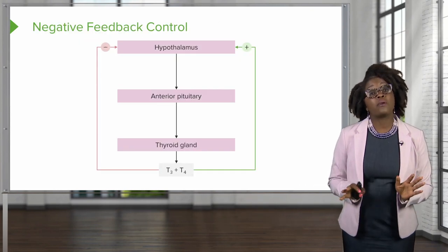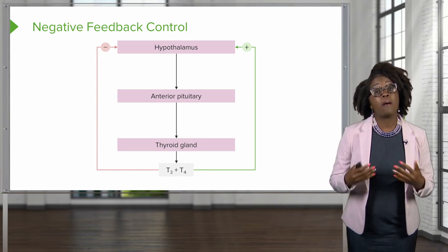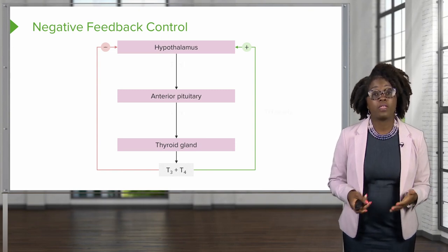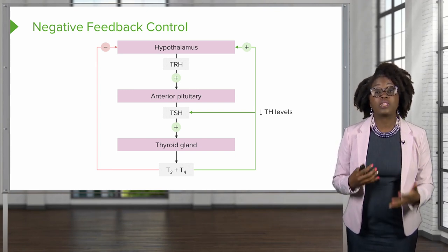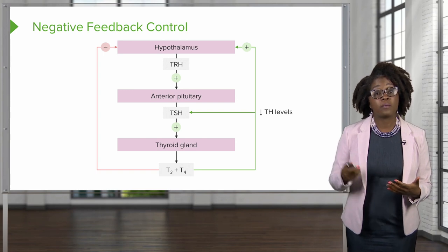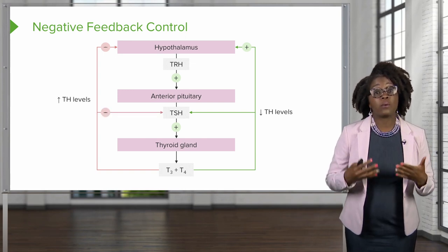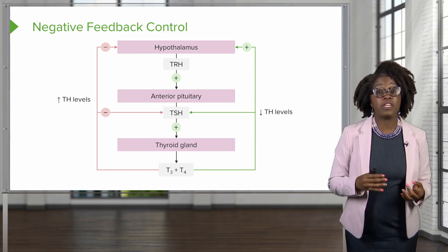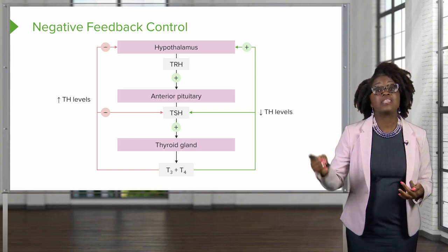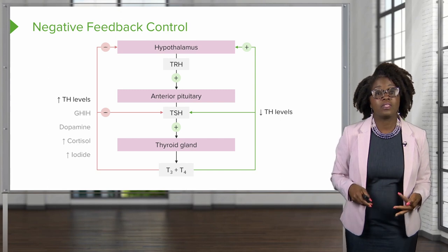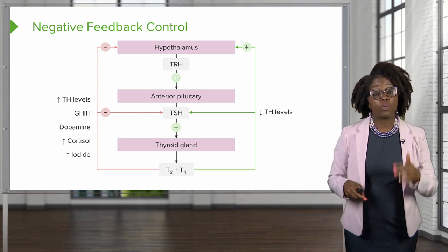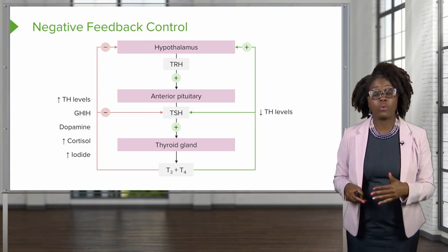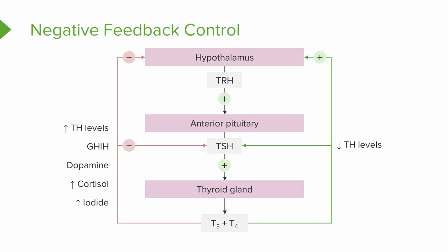Thyroid hormone release is regulated by negative feedback. Falling thyroid hormone levels stimulate the release of thyroid stimulating hormone, while rising levels provide negative feedback inhibiting it. Thyroid stimulating hormone can also be inhibited by growth hormone inhibiting hormone, dopamine, or increased levels of cortisol and iodide.